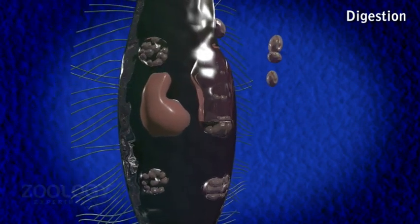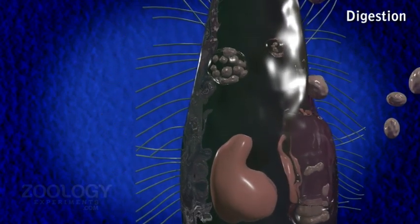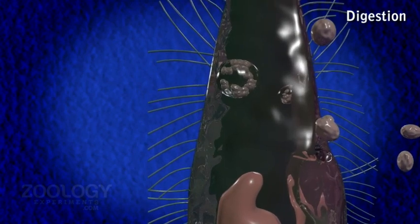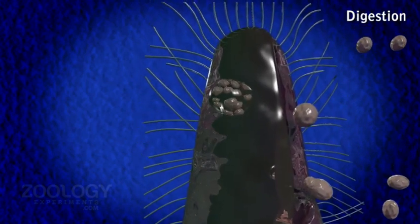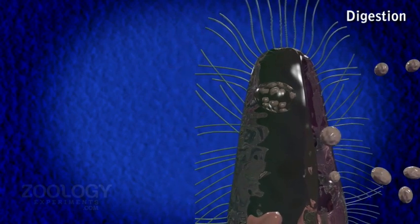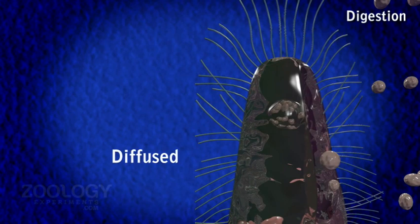Digestive enzymes are secreted by the lysosomes into the food vacuoles. Products of digestion, mostly glycogen and fat, are diffused into the surrounding cytoplasm and either stored or used for essential activity and growth.